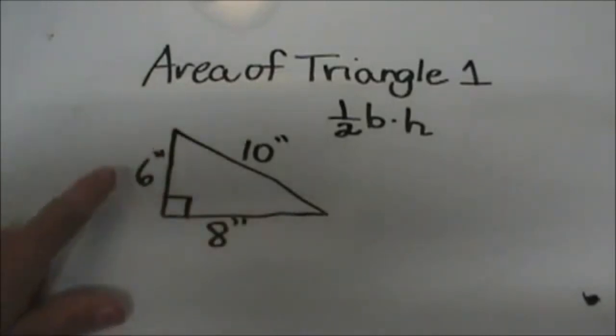We're given a right triangle with one leg that is 6 and another leg that is 8 and a hypotenuse that is 10.